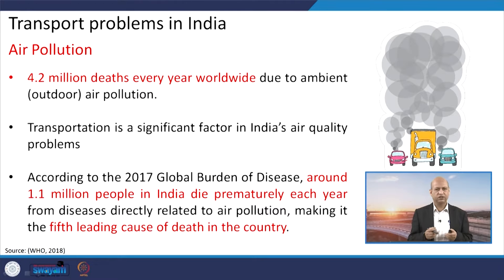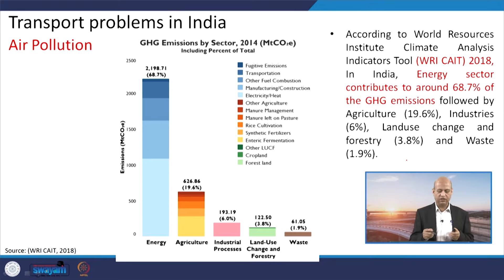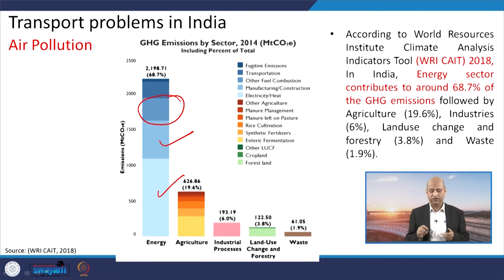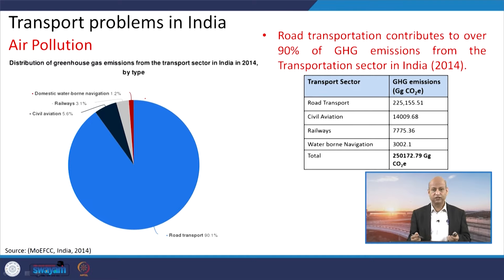These figures directly or indirectly motivate us to invest significantly in improving transportation systems and related infrastructure. Looking at air pollution and greenhouse gas emissions, the energy sector contributes the highest, composed of electricity, heat, and manufacturing. However, the transportation sector is also significant and cannot be ignored. Among transportation types, road transport is the main culprit — more than 90 percent of transportation-related air pollution emissions come from road transport alone.